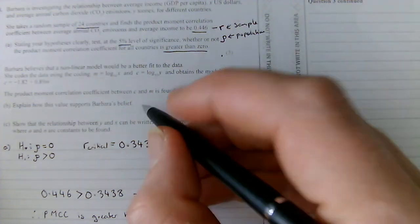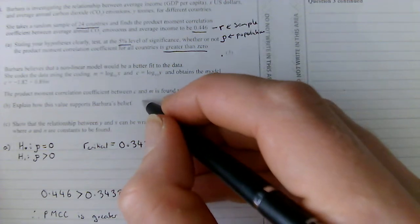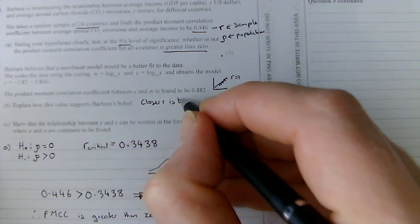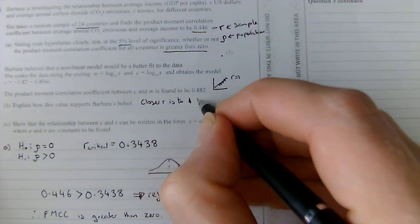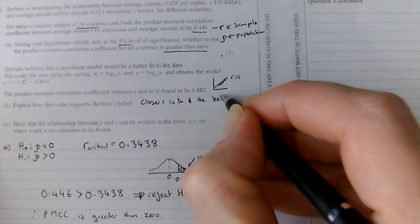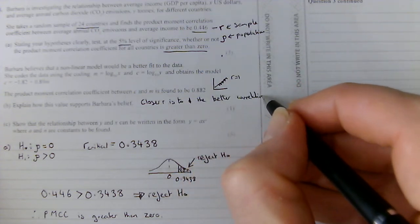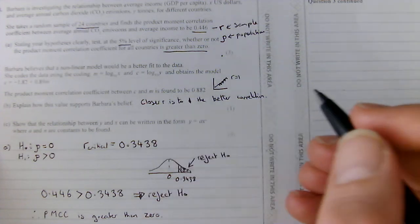And if it was negative correlation, obviously, it would be the closer it is to negative 1. Now, here, it asks us to linearise an exponential function.